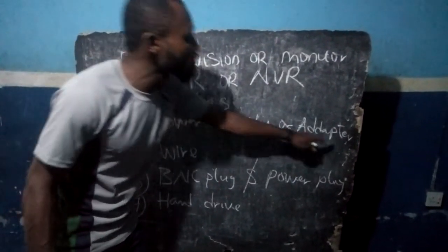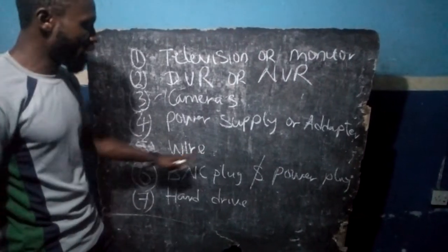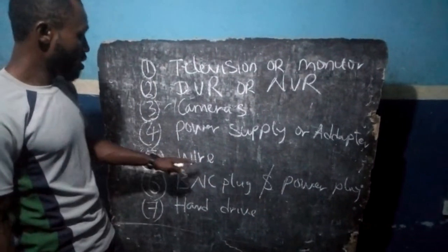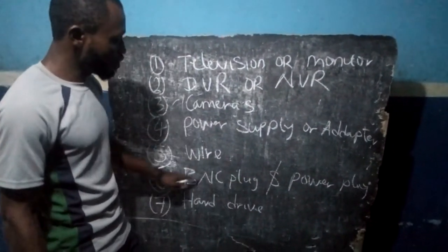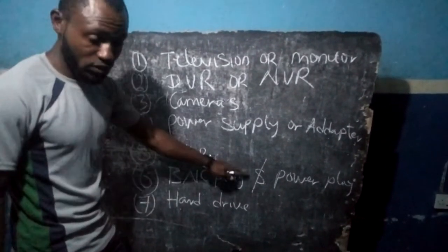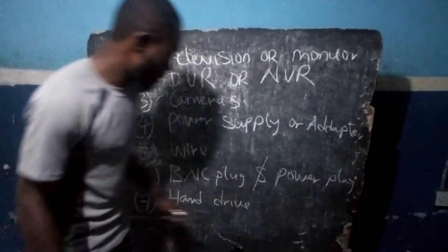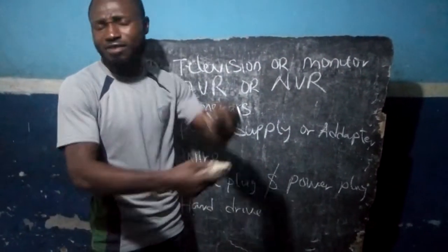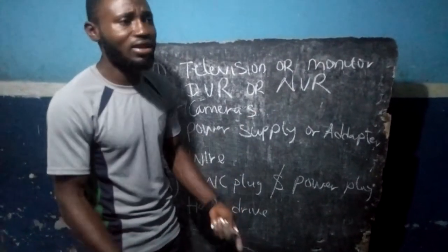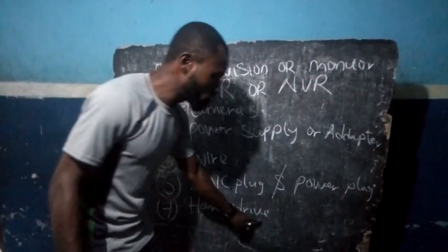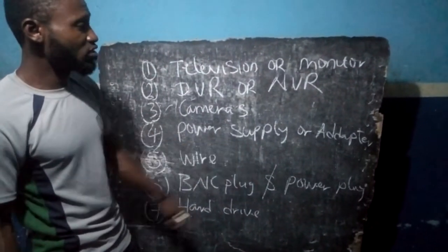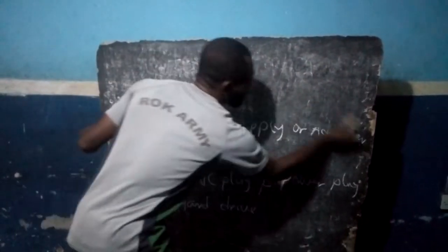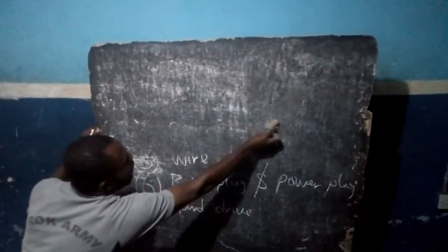You can use indoor camera or outdoor camera. Number four is the power supply — this is what powers the camera. You can use a power supply or an adapter; both work the same. For wire, you can use RG-59 or RG-58 with power and video. The BNC plug is the video plug for transmitting your video, and the power plug powers the camera. The hard drive stores video inside the DVR, just like a memory card stores data on your phone.